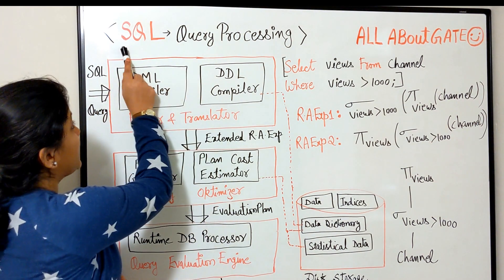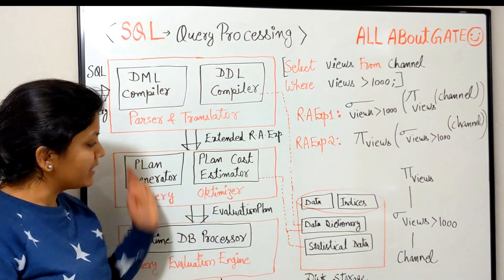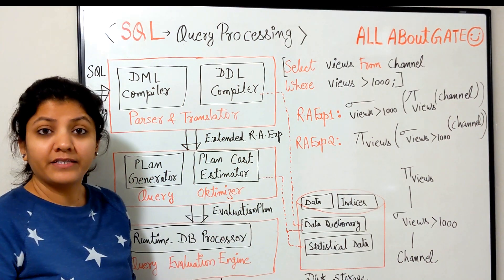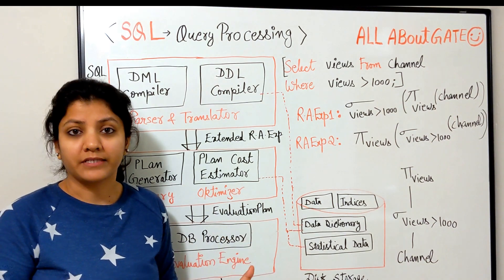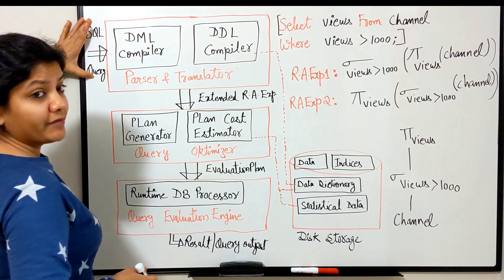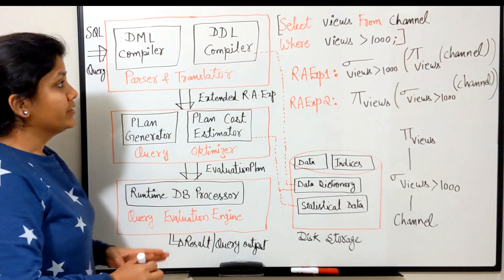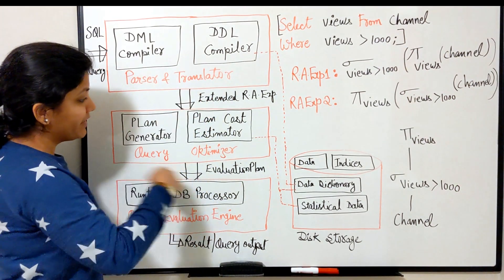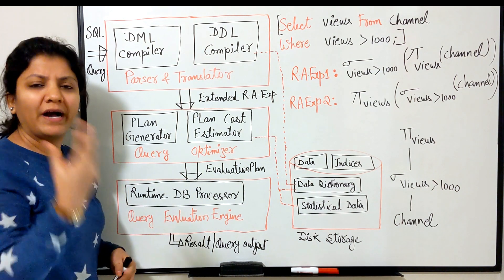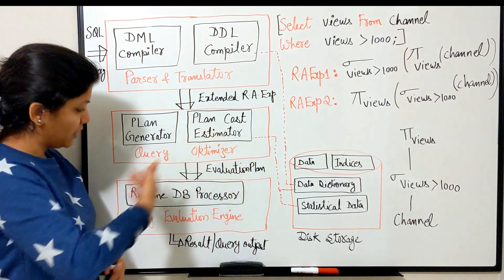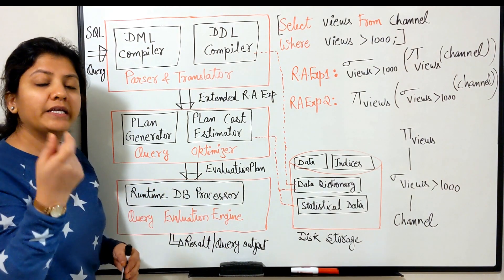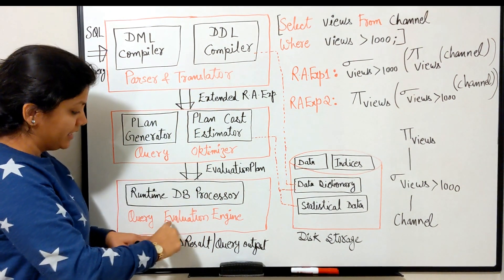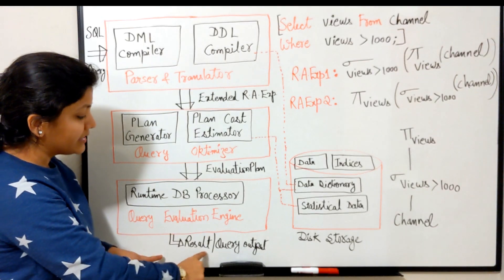We are going to understand SQL query processing. I have a bigger diagram on the board and an example. We will go through the block diagram and the example simultaneously. First, we have the SQL query given as input. This diagram has a few components: the parser and translator, which takes the SQL query as input; the query optimizer, which optimizes the query; and the query evaluation engine, which finally executes the query. The query enters, passes through these stages, and finally you get the query output.